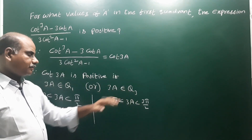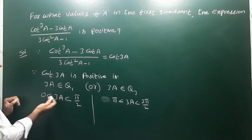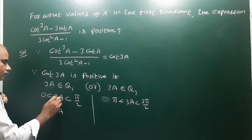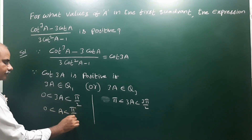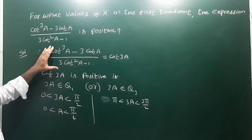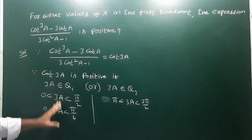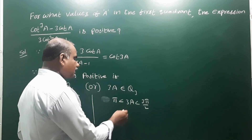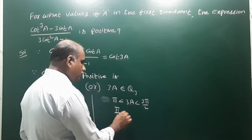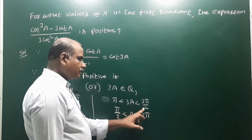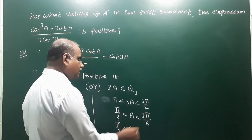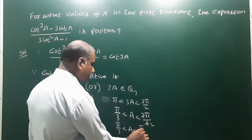So for the first quadrant case, dividing all parts by 3: 0 < a < π/6. For the third quadrant case, transposing 3 to both sides: π/3 < a < π/2. So 0 < a < π/6 is one case and π/3 < a < π/2 is the other case.